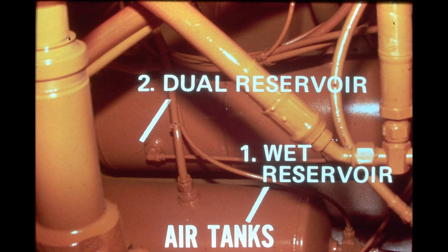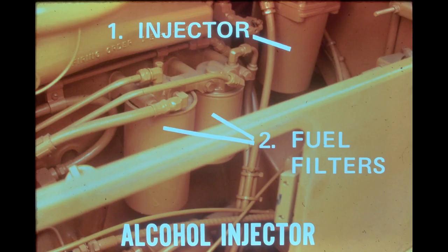Each reservoir has an external drain line located on the right side of the loader. The drain lines are used to remove any moisture which collects in the reservoirs. The 540 air system can be equipped with an optional alcohol injector. The unit is located in the air line between the compressor and the wet reservoir and is mounted in the right side of the engine compartment next to the fuel filters.